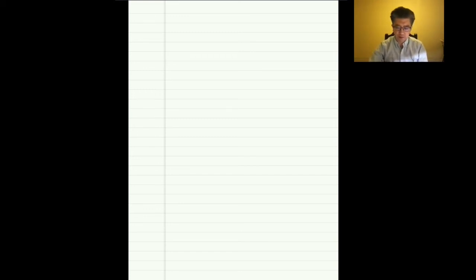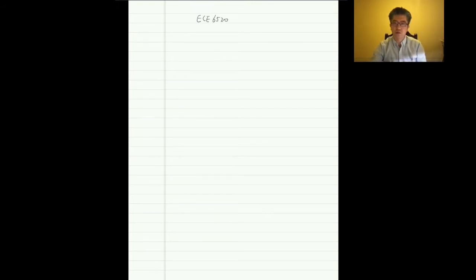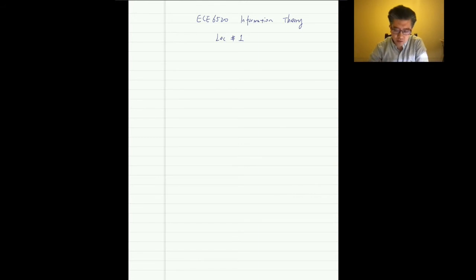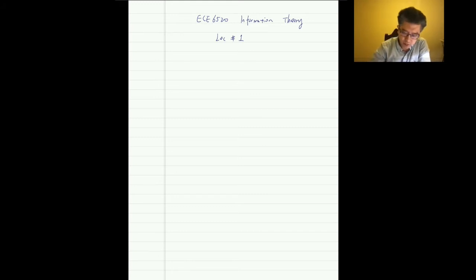Hello everyone, welcome to ECE 6520. Our course is called Information Theory. Today is our lecture number one. Information theory, from the name, you can see that it is about the science of information — it was developed by Shannon in 1948.